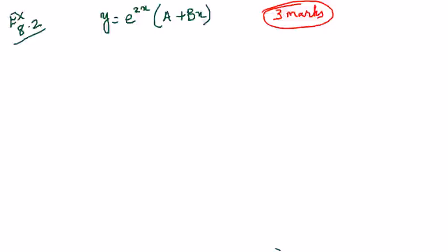Example 8.2 is typically a 3 mark question as part of section B. You have to form the differential equation for this given equation. It is one of the easiest sums.